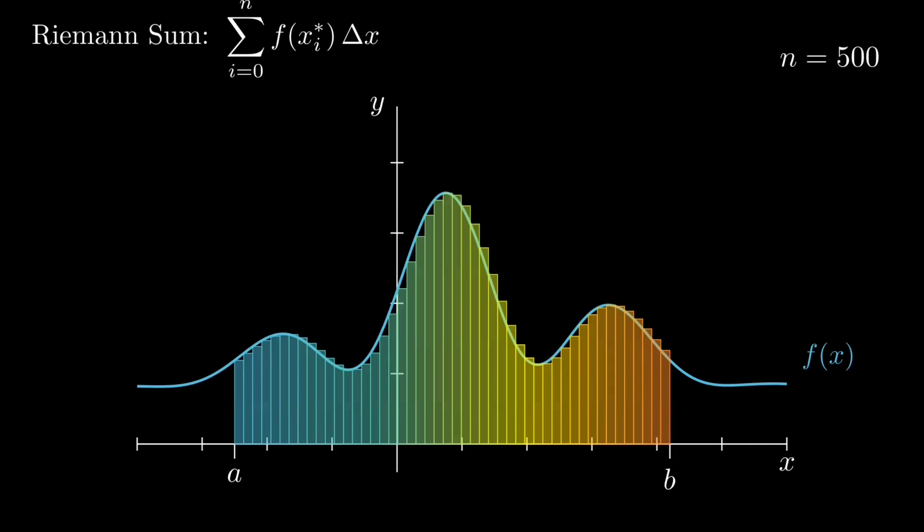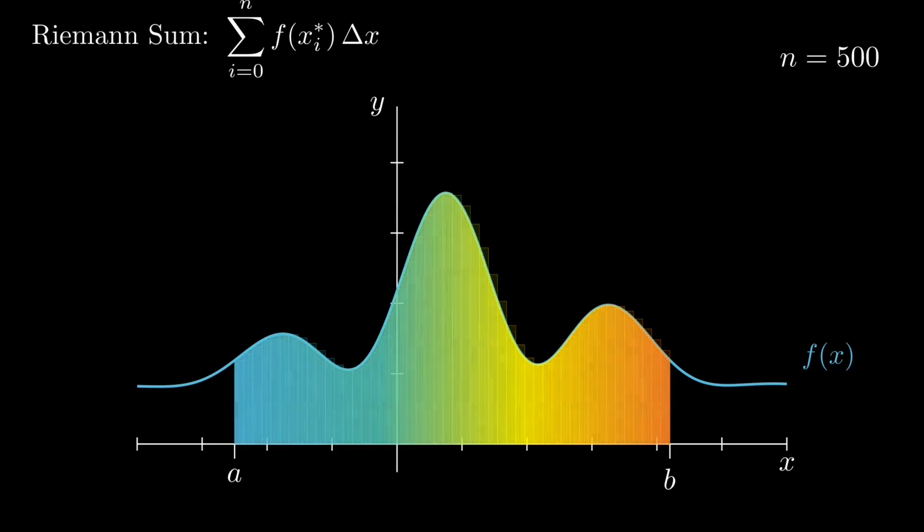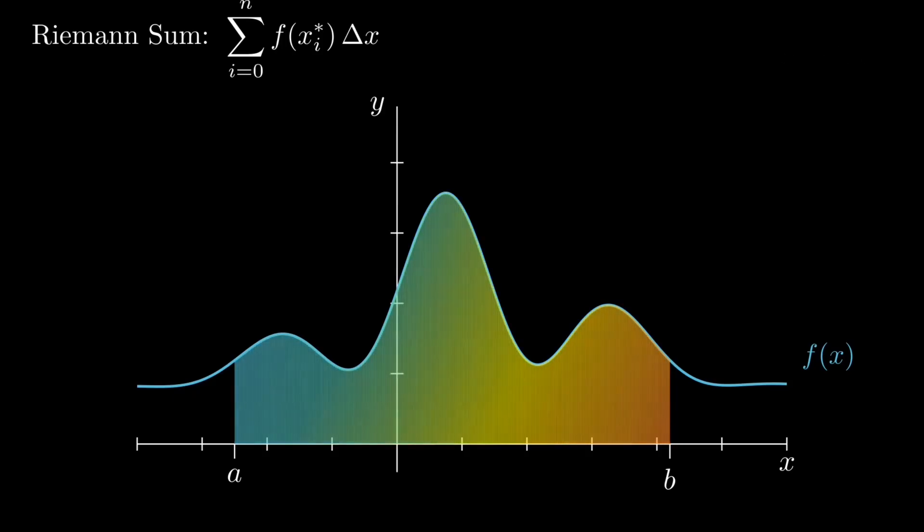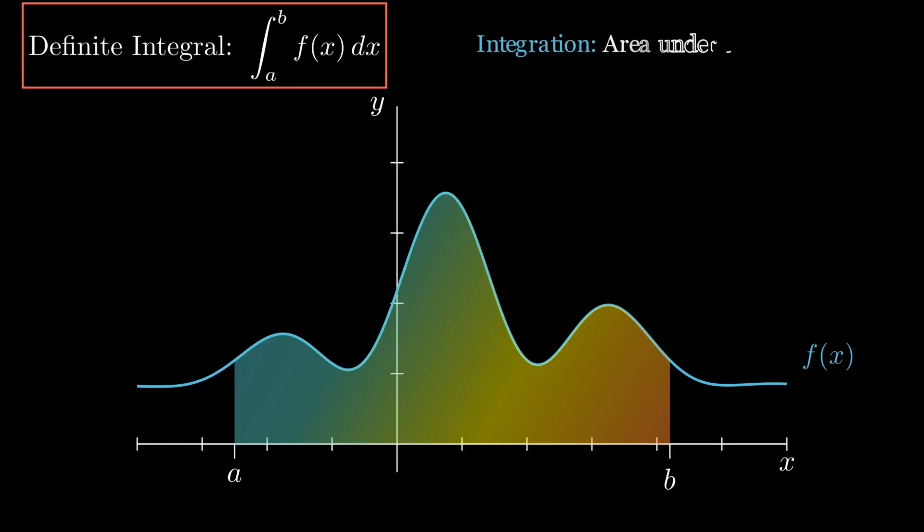The finer we make our subdivision by increasing n, the better our approximation becomes as the rectangles more closely follow the actual shape of the curve. In the limit as delta x tends to 0, the Riemann sum becomes exact. This is what we call the definite integral of f from a to b.